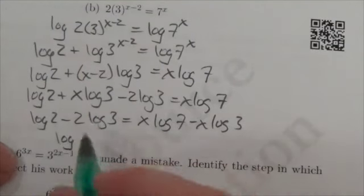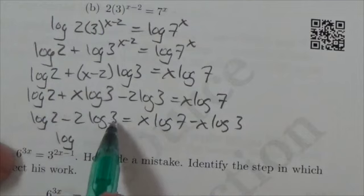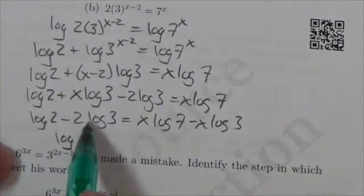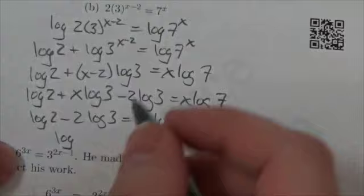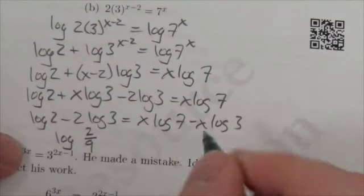This is going to end up being the log of, now watch this, the 2 is going to go up as an exponent on the 3. So this is going to end up being the log of 3 squared, which is 9. And that subtraction, this is going to quickly become the log of 2 ninths.